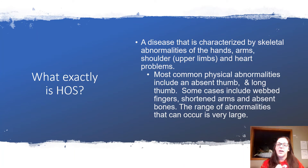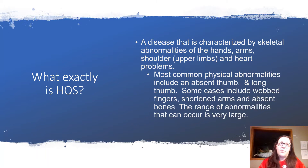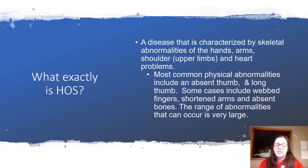So what exactly is Holt-Oram Syndrome? It is a disease characterized by abnormalities of the hands, arms, shoulders, and heart issues. Most commonly, people with Holt-Oram Syndrome are found to have physical abnormalities that include an absent thumb, a long thumb that looks more like a pointer finger, and in some cases people also have webbed fingers, shortened arms, and absent bones. There is a very large range of abnormalities that can occur.